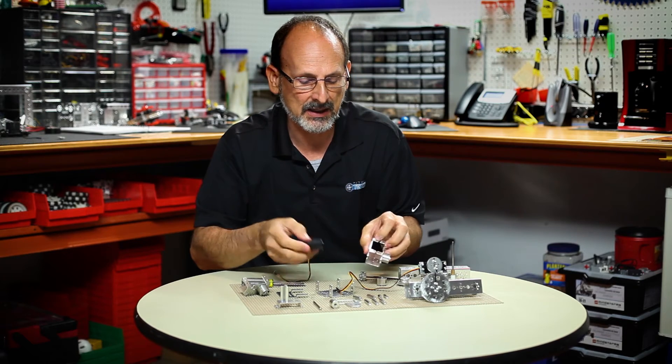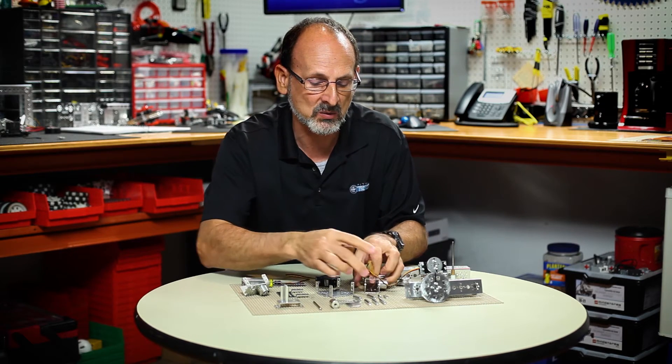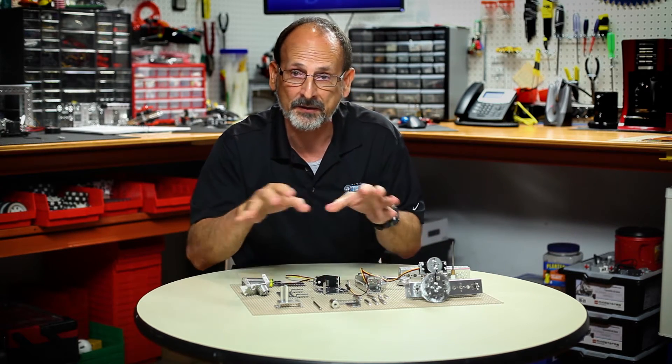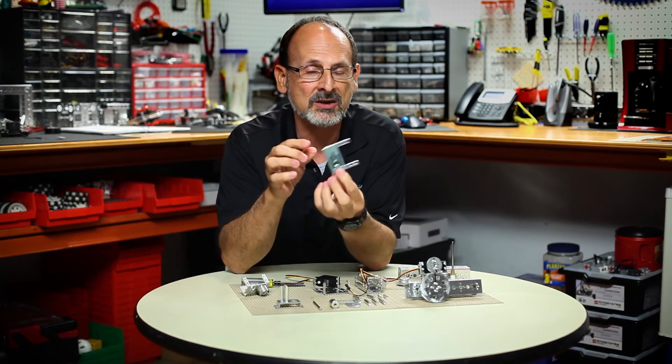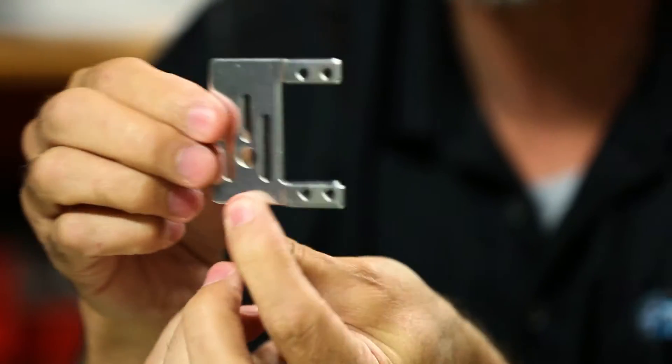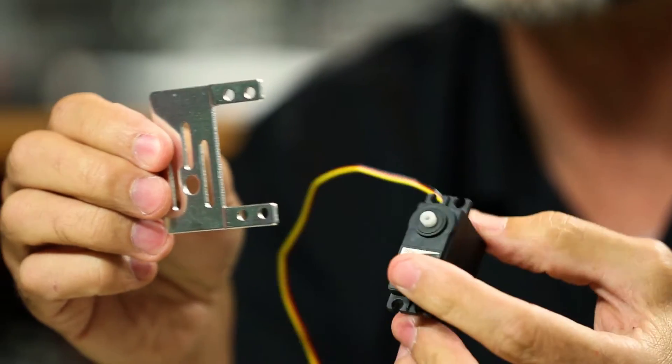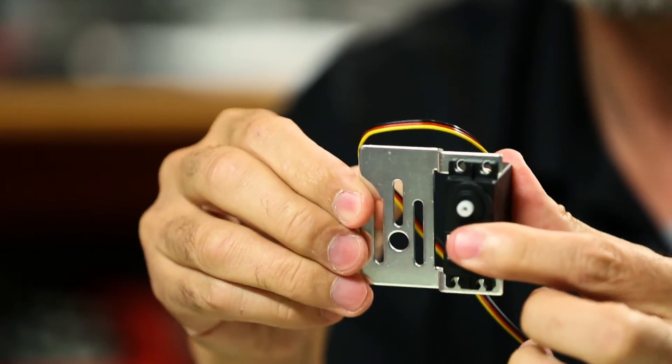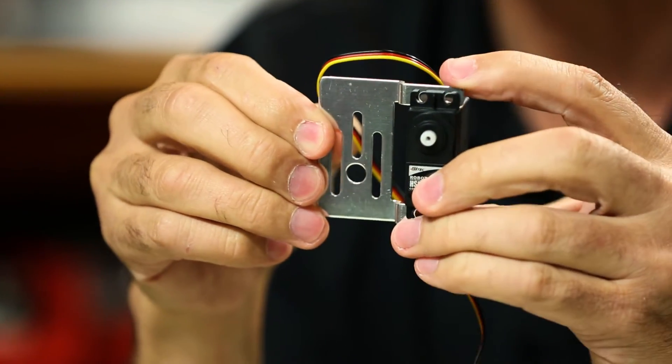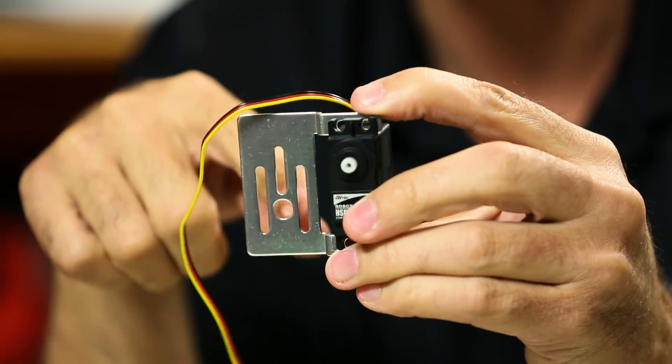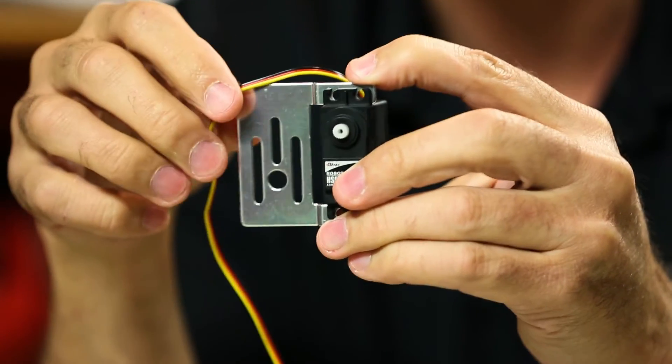The next bracket that I want to show you is kind of the last one in these brackets that are on the outside. This is this adjustable bracket and you can see that again the servo is going to mount on the outside and I have this time a hole pattern that is adjustable.